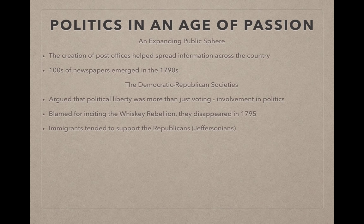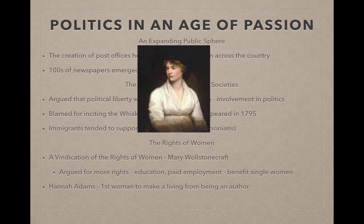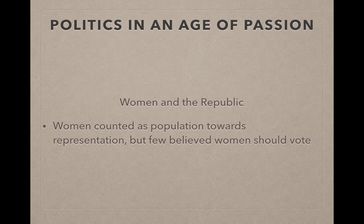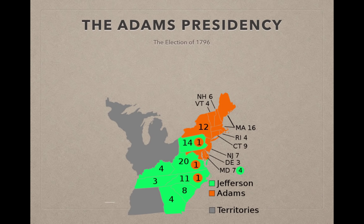Mary Wollstonecraft wrote A Vindication of the Rights of Women — her daughter Shelley wrote Frankenstein. Mary argued for more rights such as education and paid employment for women, which would benefit single women. Hannah Adams was another woman who became the first woman to make a living as an author. There were many calls for educational opportunities for women, tied to the idea of Republican Motherhood. Women counted toward population for House representation, but were not given the right to vote.